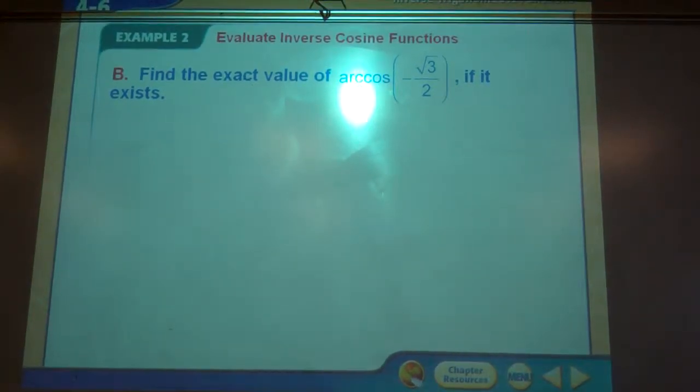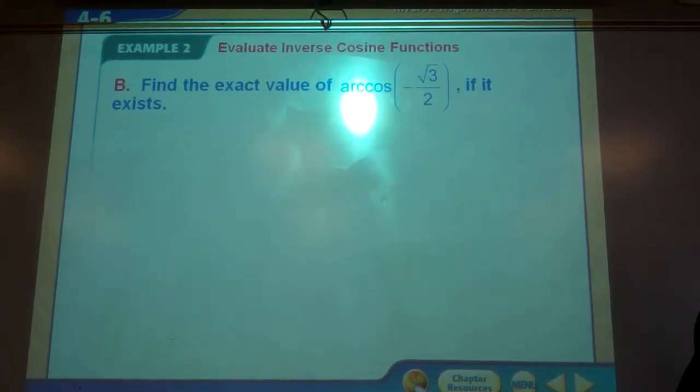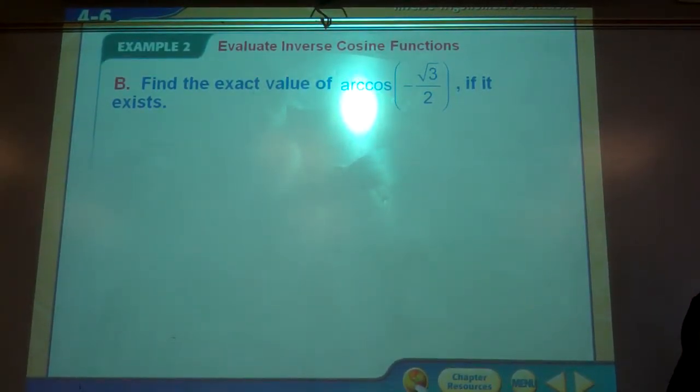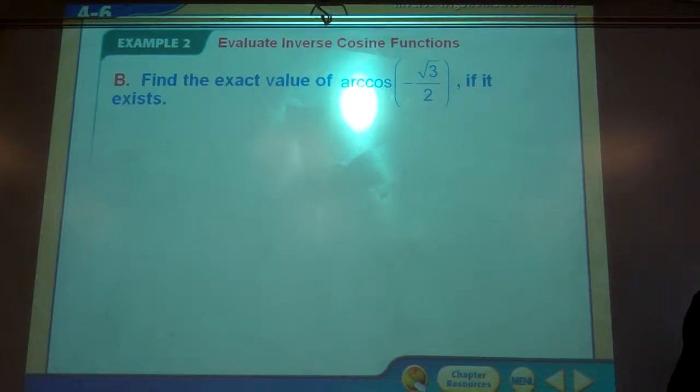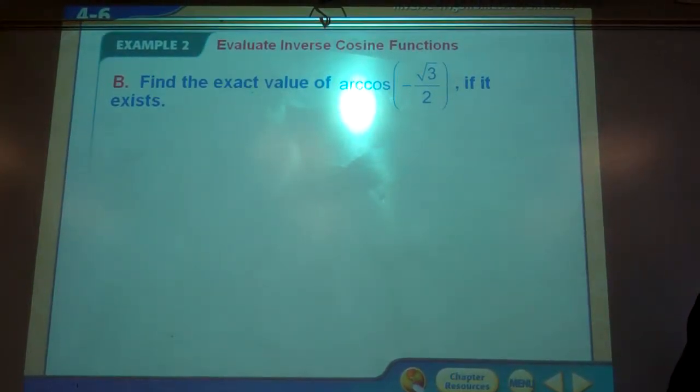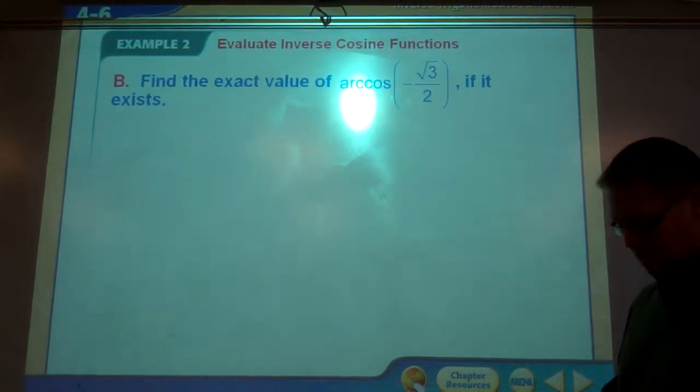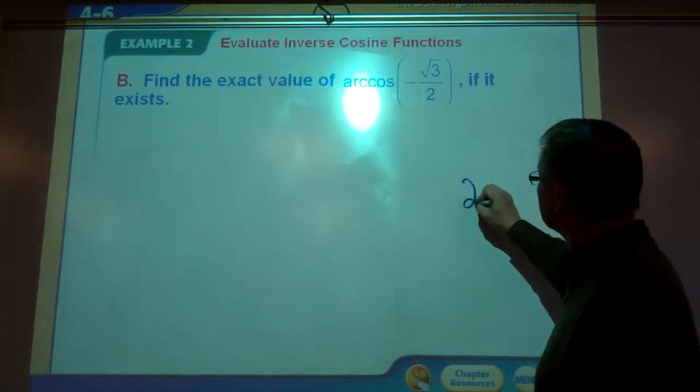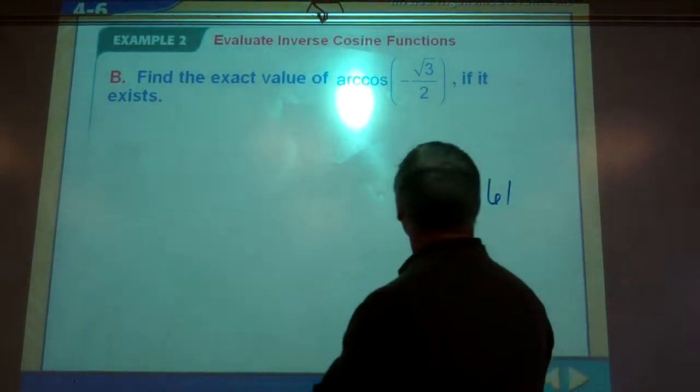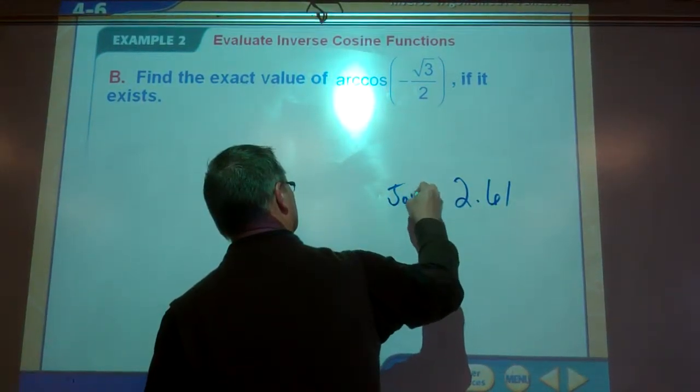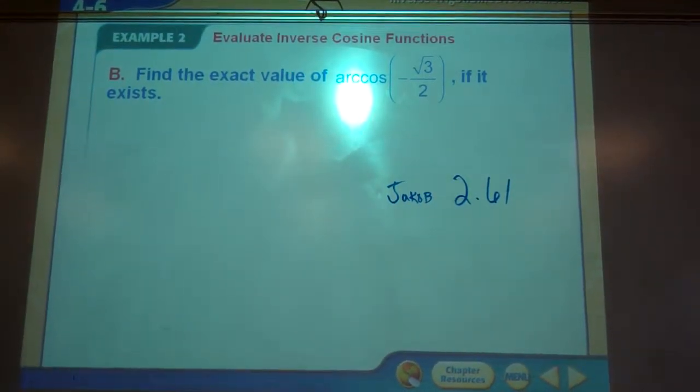I'll let you try this one. Arccosine. Negative square root of three over two. That's wrong. Just got it. Try that. 2.6179. This is five pi thirds. Someone said 2.61. It's this guy right here. Jake. Jake wants his name by that.